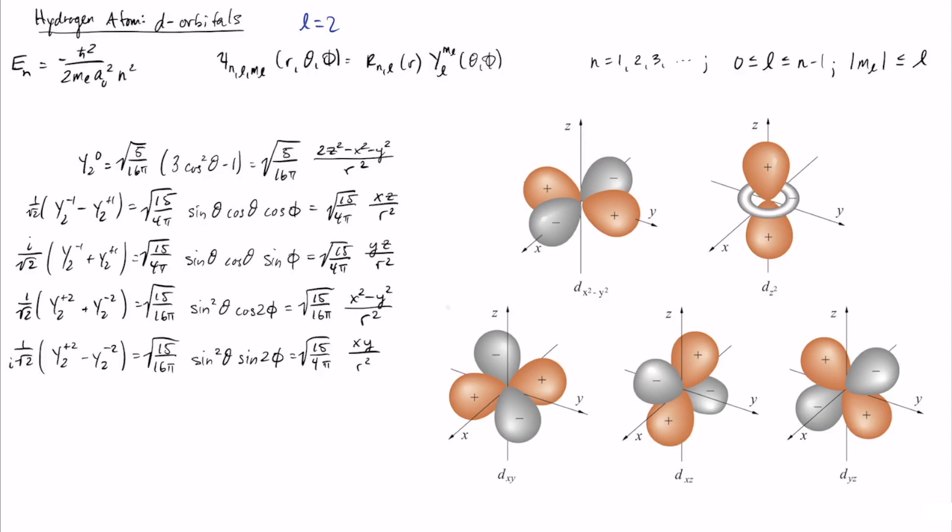So we can do the same exact thing here with the l equals 2 solutions and then we'll see what we get in terms of the d orbitals there. I already have these written out just to save us a little bit of time. Let's take a look at what these things give you.